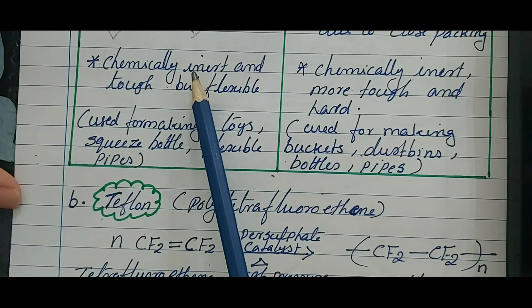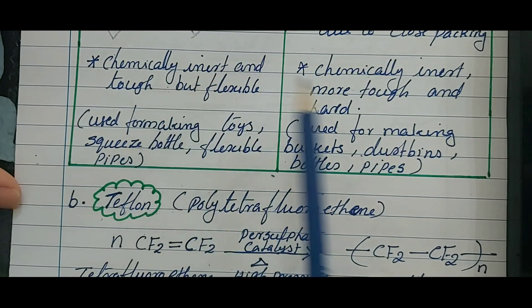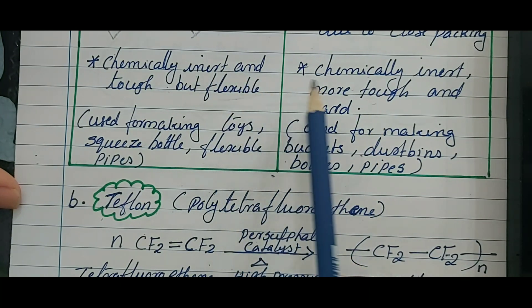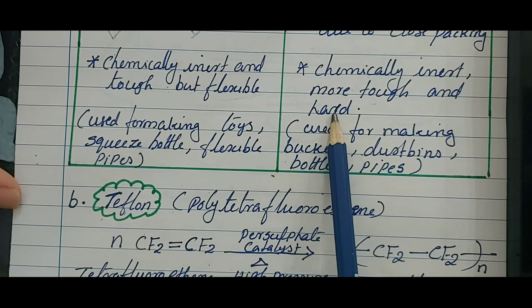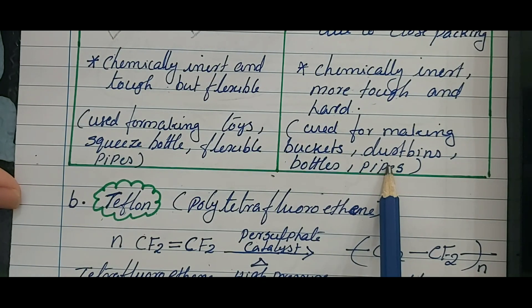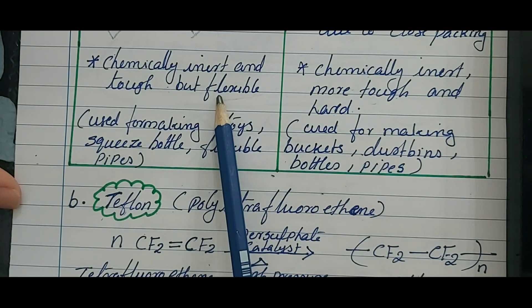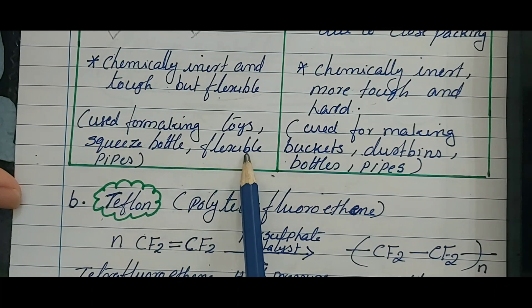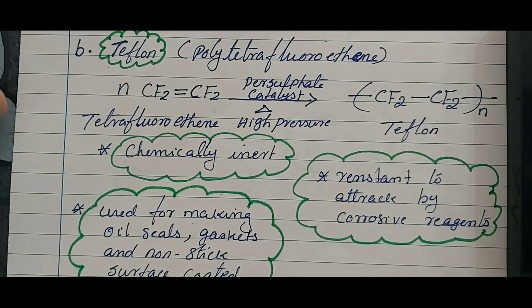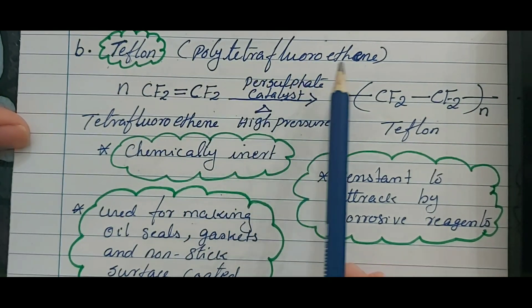Both LDP and HDP are chemically inert and tough, but LDP is flexible while HDP is hard. HDP is used for making buckets, dustbins, bottles, and pipes. Since LDP is flexible, it is used to make squeeze bottles, flexible pipes, etc.